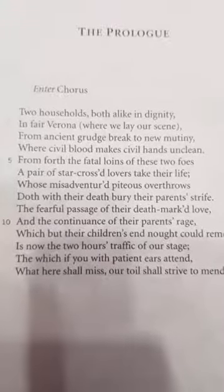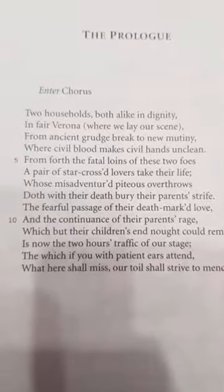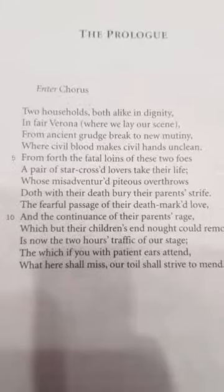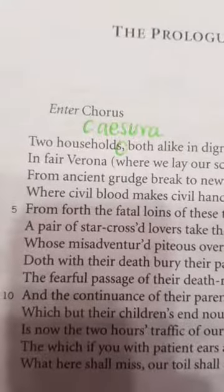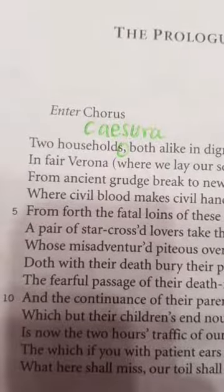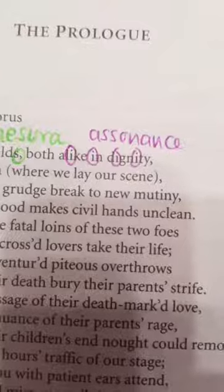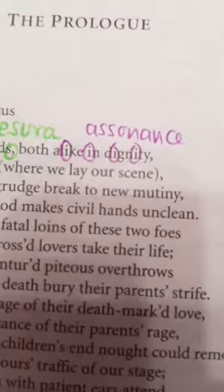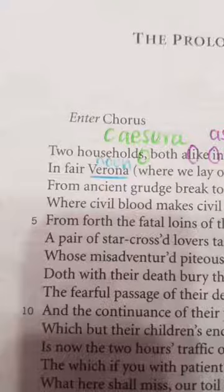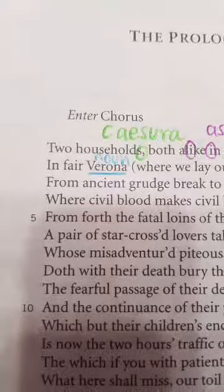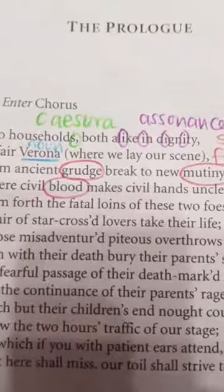Now, the prologue at the beginning is important because it basically foreshadows what will happen to Romeo and Juliet in the play. This caesura here is really important in setting the scene for us. The assonance of 'I' emphasises the similarity between the Montagues and the Capulets. The noun 'Verona' tells us that this takes place in Italy.